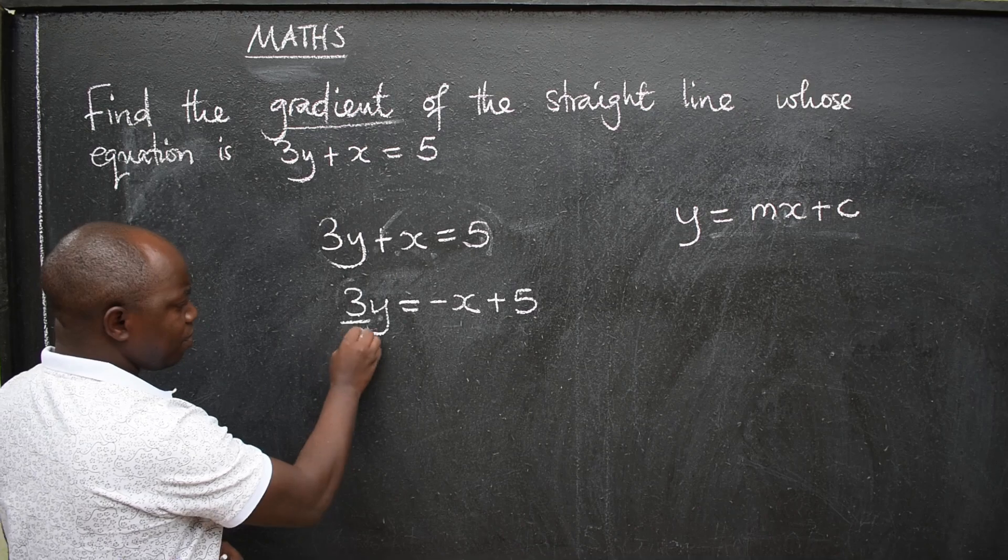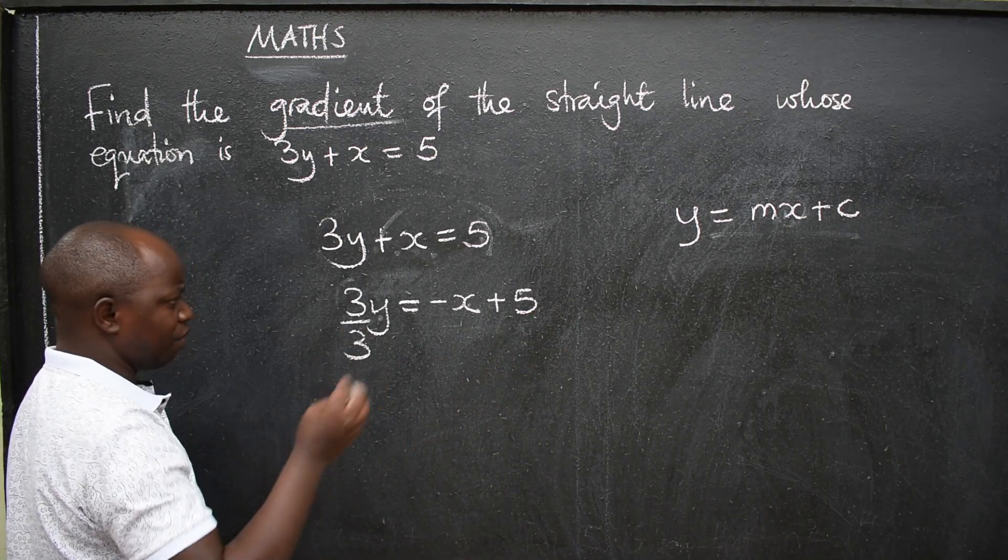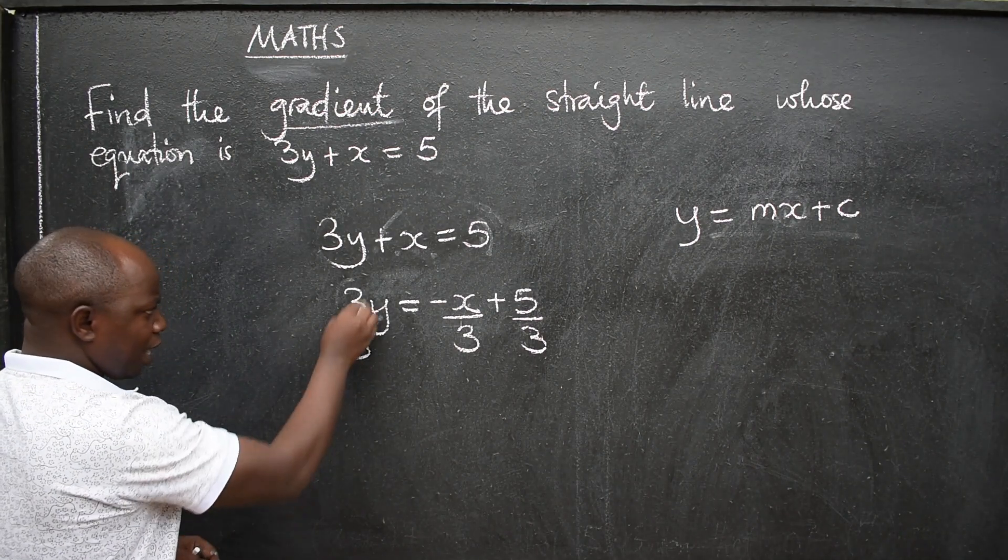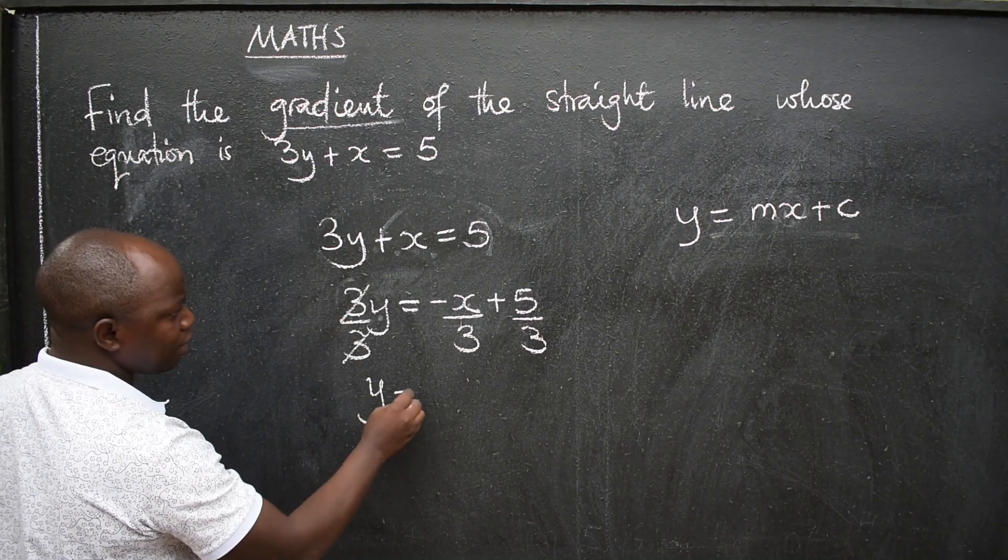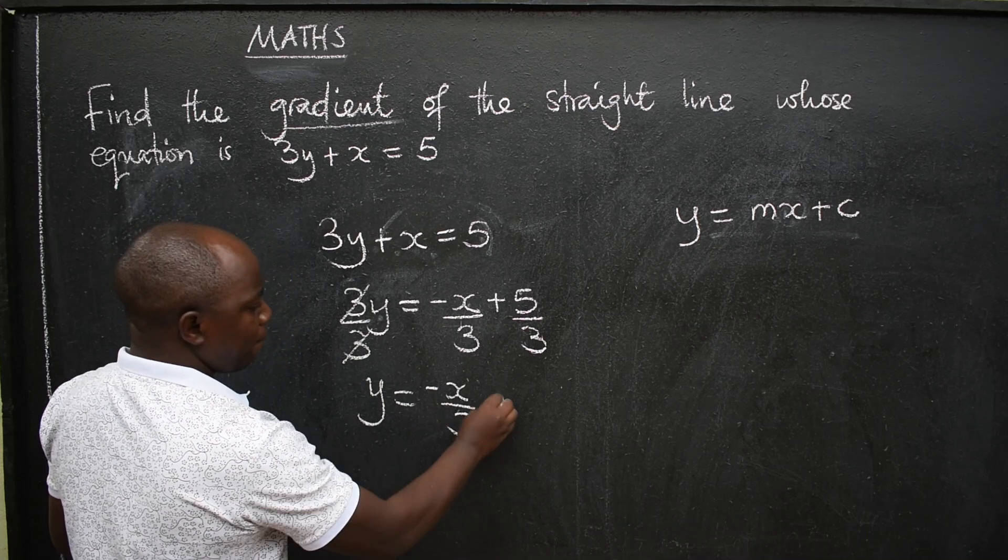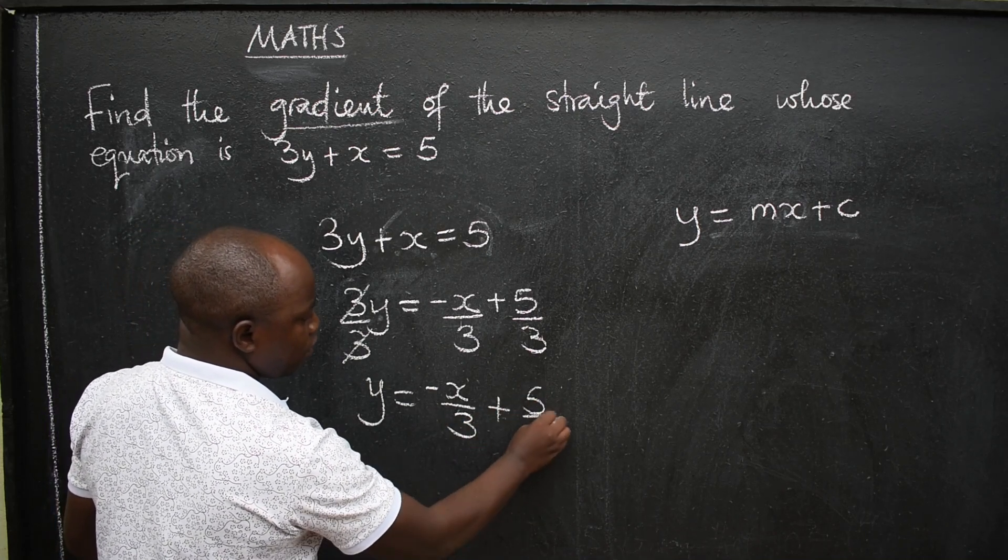We still need to get rid of the 3. So we divide by 3 everywhere. Even here 3, even here 3. So if you cancel this, we remain with y = -x/3 + 5/3.